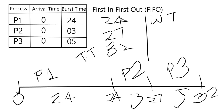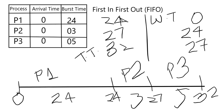Now let's calculate the waiting time. The first process did not wait at all because as soon as it arrived it started executing, so the waiting time for P1 is 0. Process 2 arrived at time unit 0 but started at time unit 24, so the waiting time for P2 is 24. Process 3 also arrived at time unit 0 but started executing at 27, so it waited for 27 units of time.